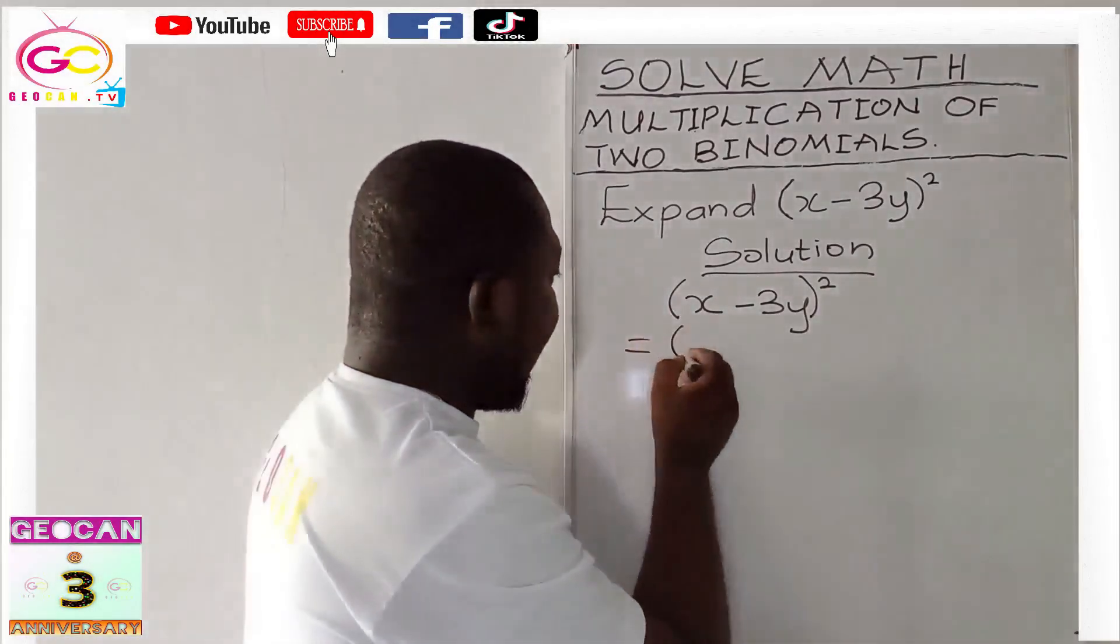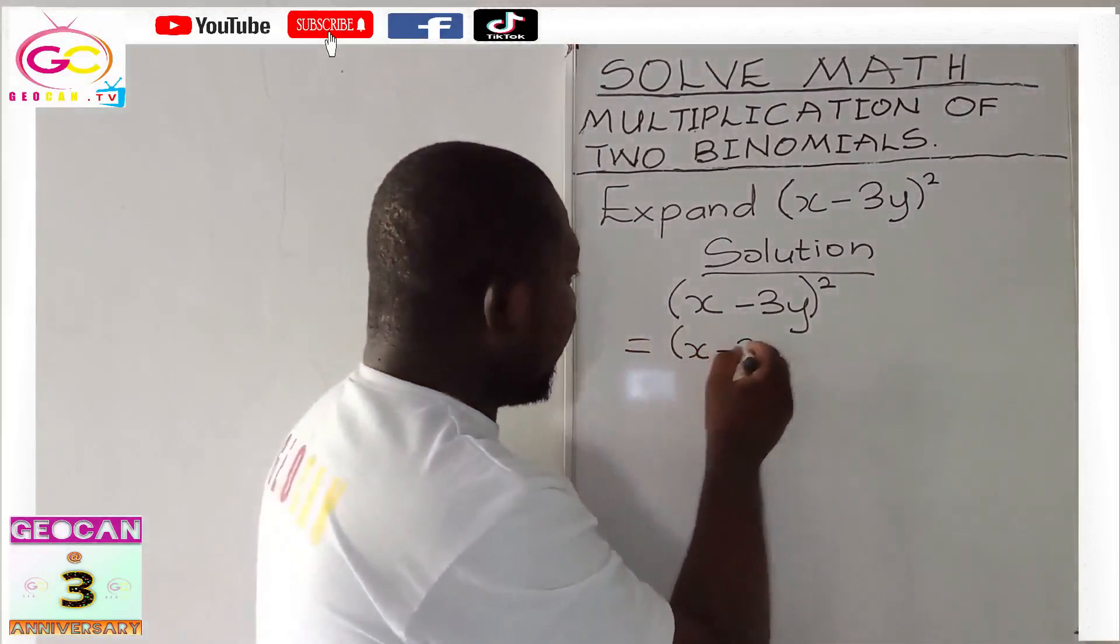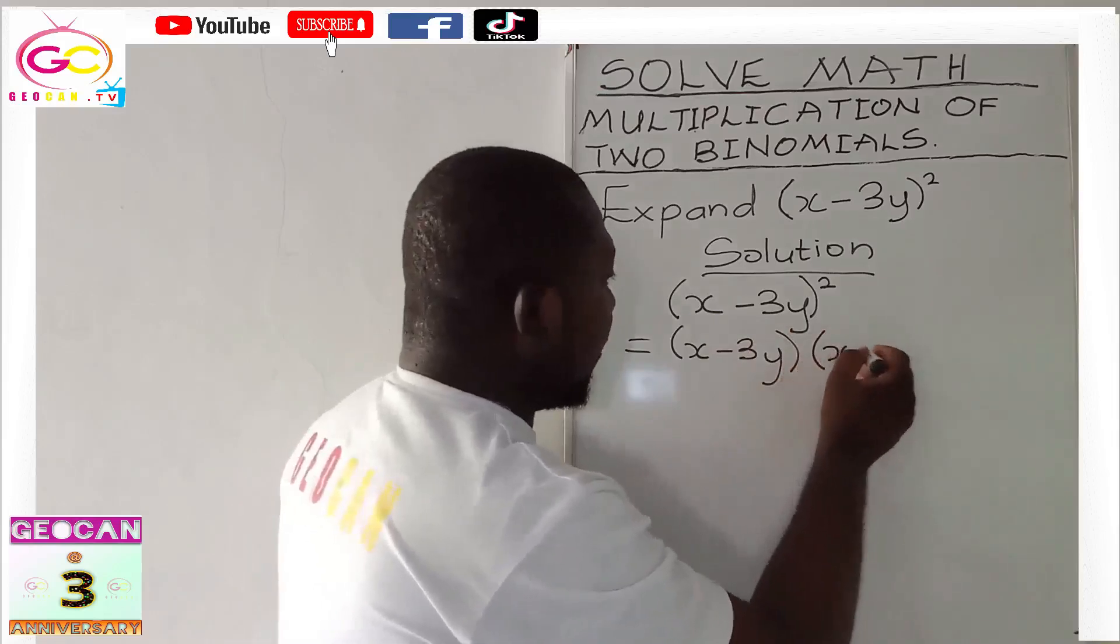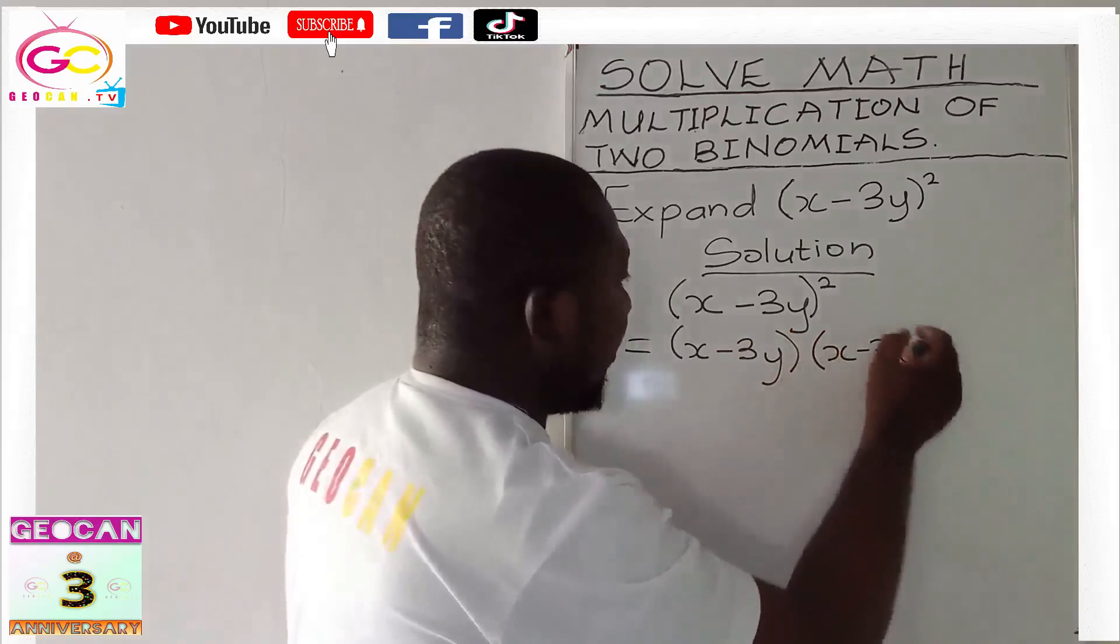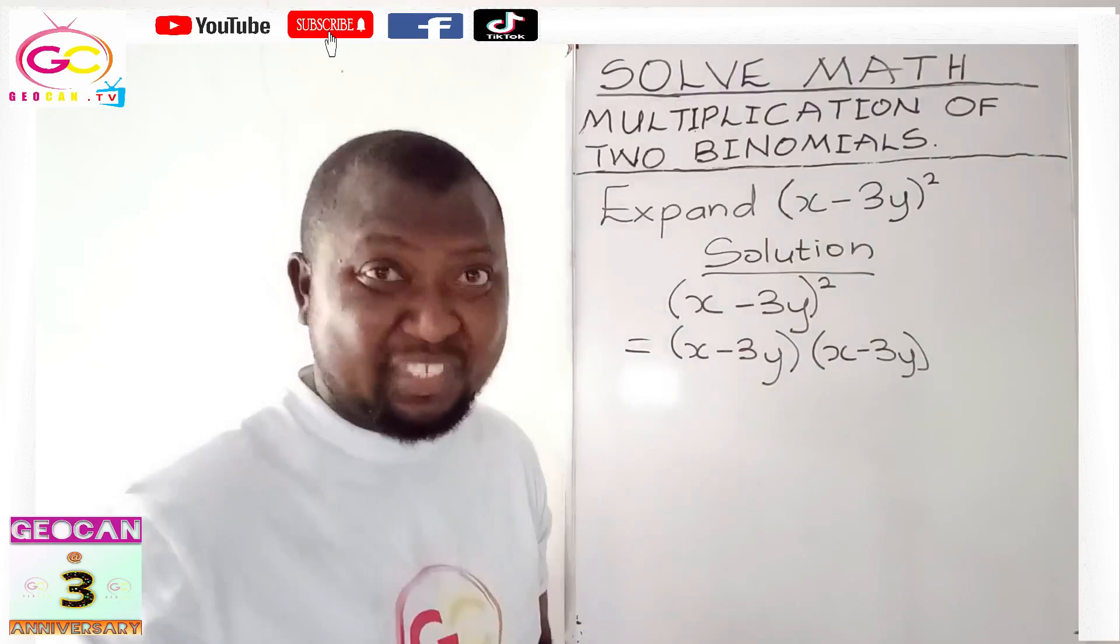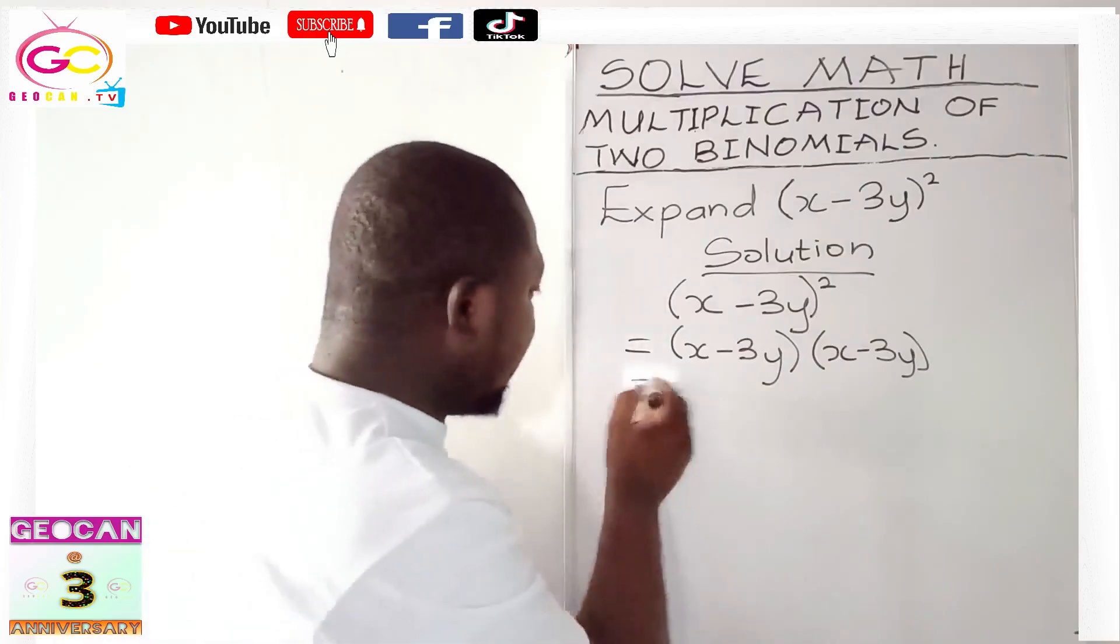So yes, you have into bracket x minus 3y bracket close, into bracket x minus 3y bracket close. Simple, right? Now, it becomes easy to tackle. True or false. Yes, that is true. So let's continue.